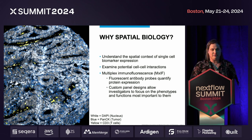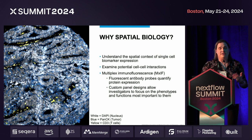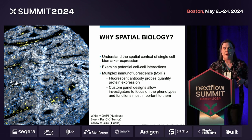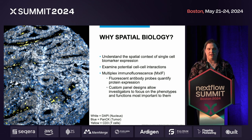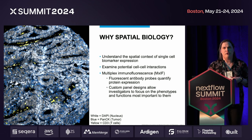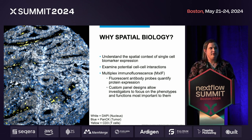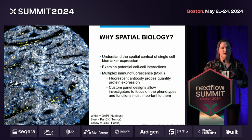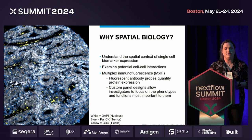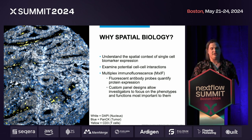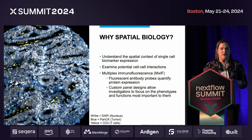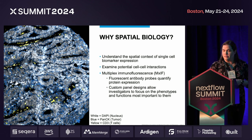A little intro on spatial biology: spatial biology allows us to understand the spatial context of single-cell biomarker expression. Not only can we tell which biomarkers a cell is expressing, we can also tell where it is in the tissue and which neighboring cells it might be interacting with. The specific type of spatial omics data that SpaFlow works with is called multiplex immunofluorescence, or MXIF. This technology uses fluorescent antibody probes to quantify protein expression, and we can mix and match those probes into custom panel designs so that investigators can focus on the phenotypes and cellular functions that are most important to them.